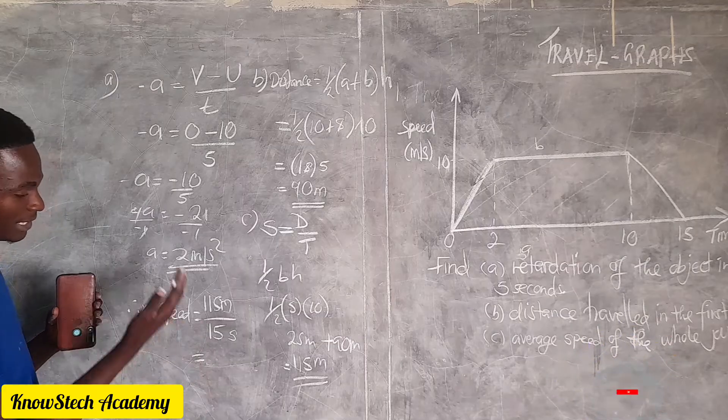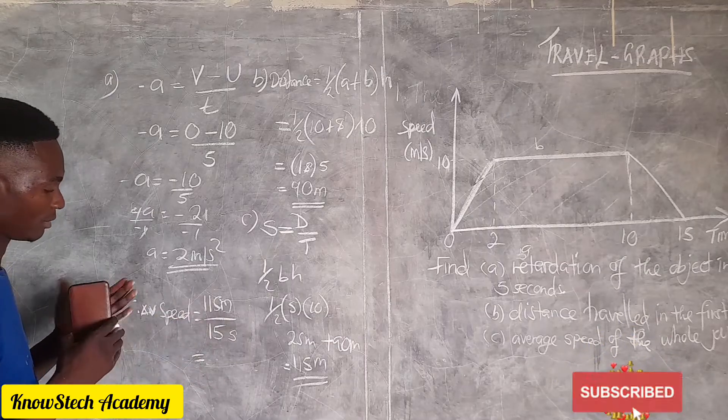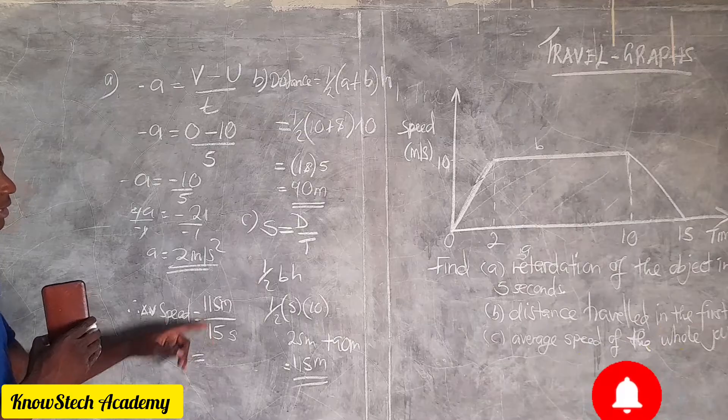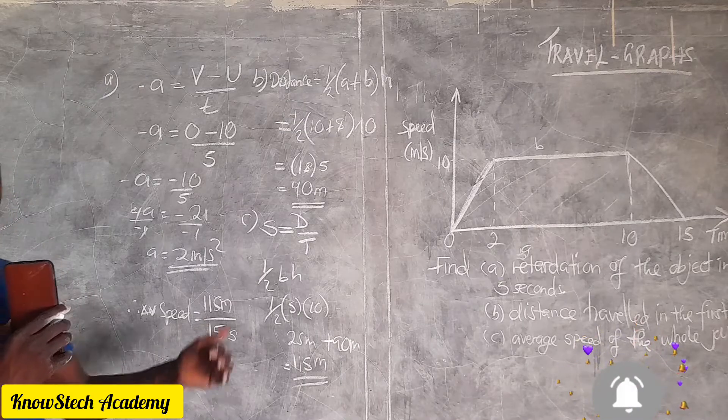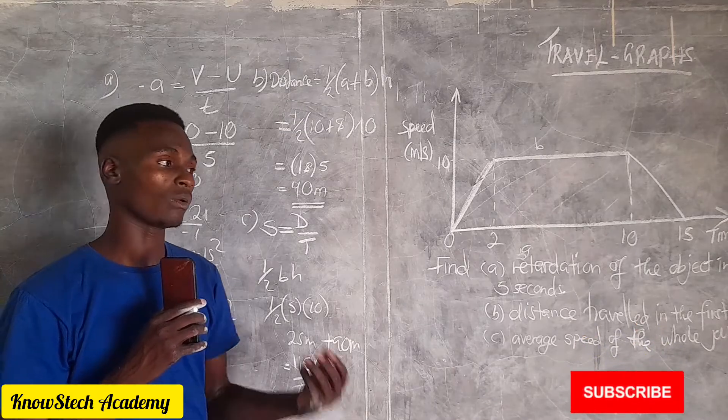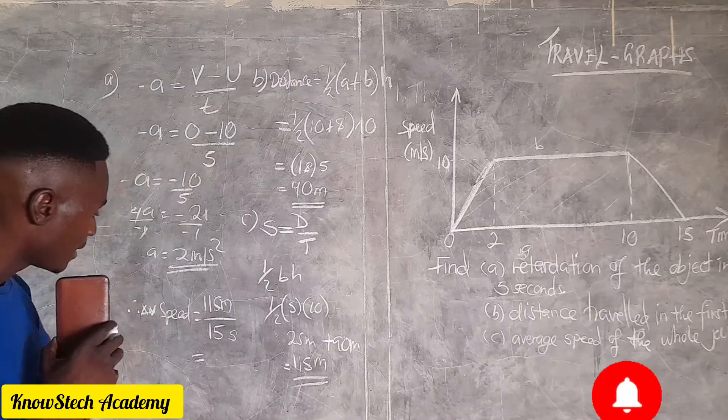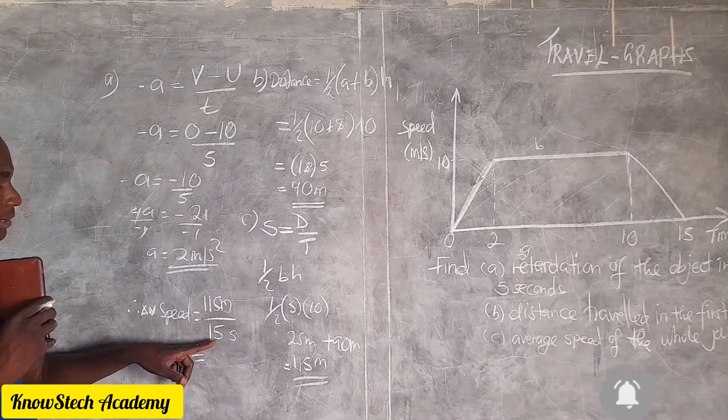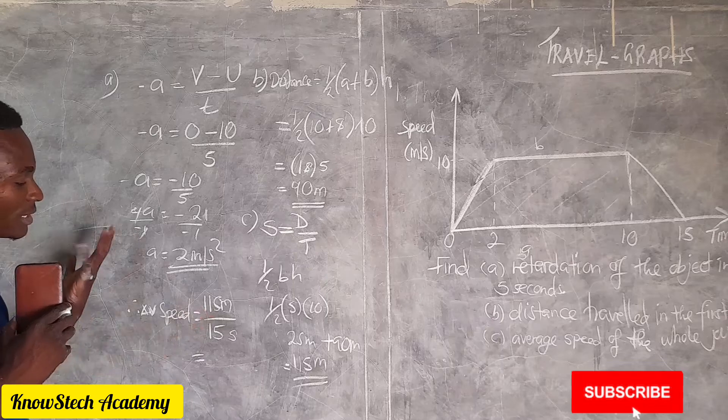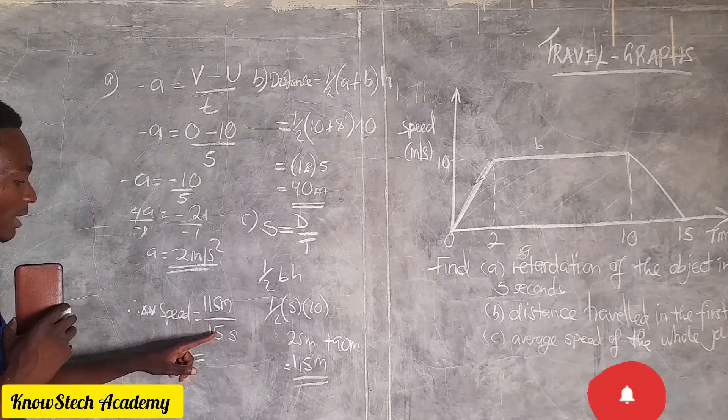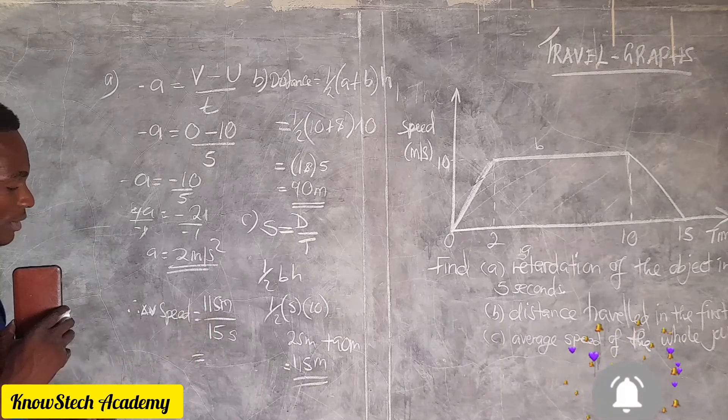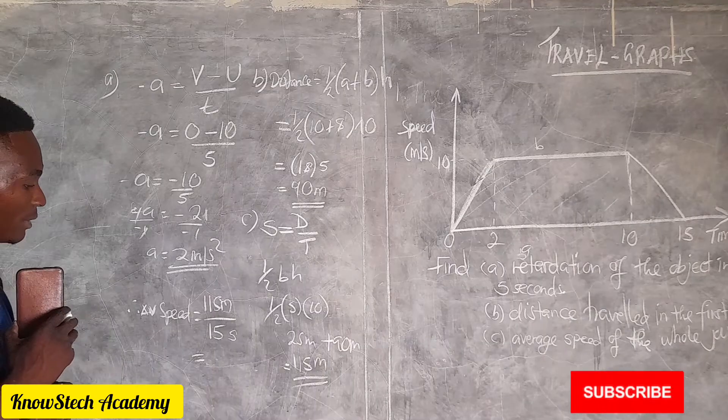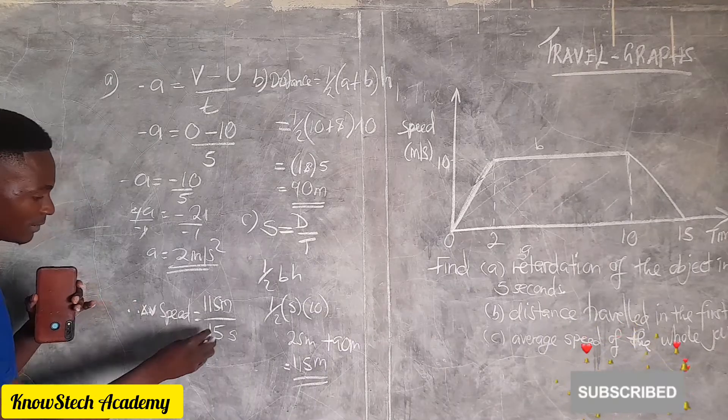Or we can put the units at the end if you're confused. So now we have 15. How many times does 15 go into 115? Now if you look at this 15, you can reduce it.